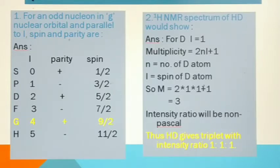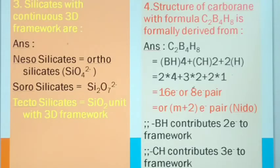Number three: silicates with continuous 3D framework. We know neso silicates are also called ortho silicates, and they have SiO4 2- tetrahedra as a unit. Soro silicates have Si2O7 2-. Tecto silicates have SiO2 unit with 3D framework, so the answer will be tecto silicate with SiO2 unit. It's a general simple question - you have to learn which unit is present in which silicate.